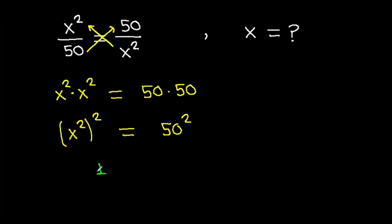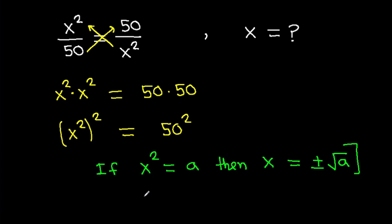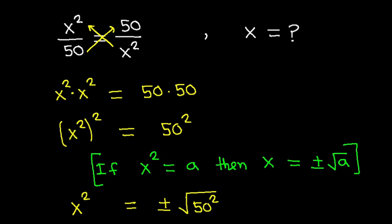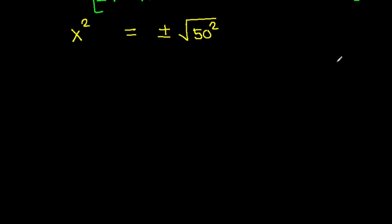And if x squared is a, then x is plus minus root a. So, a squared will be plus minus root of 50 squared. And x squared and the square root will get cancelled. So, a squared equals plus minus 50.